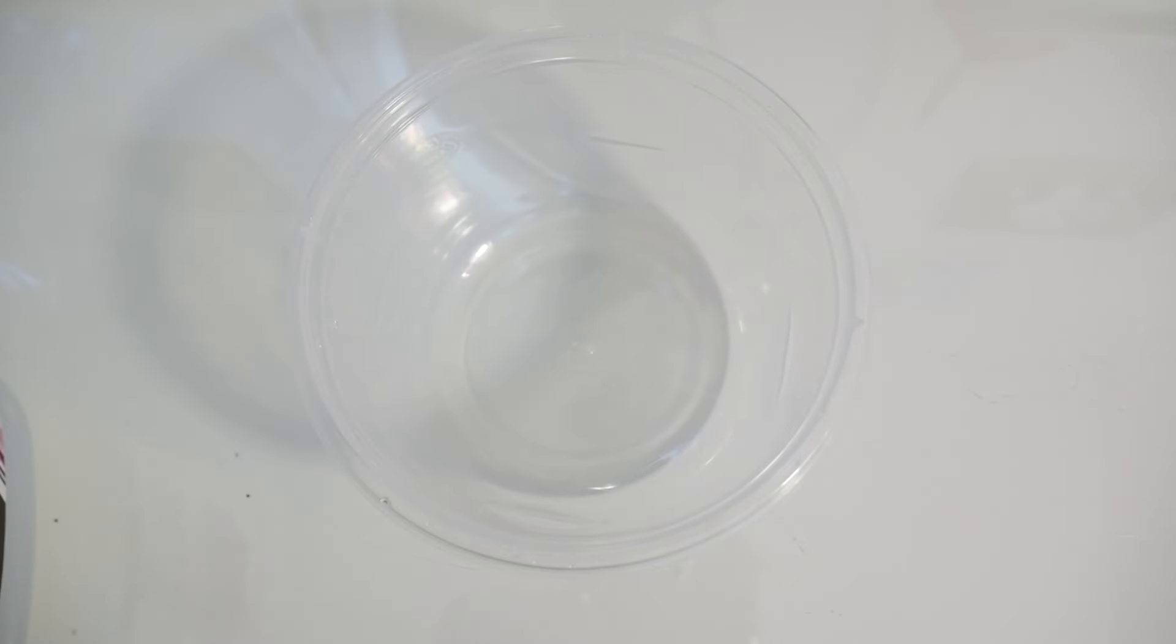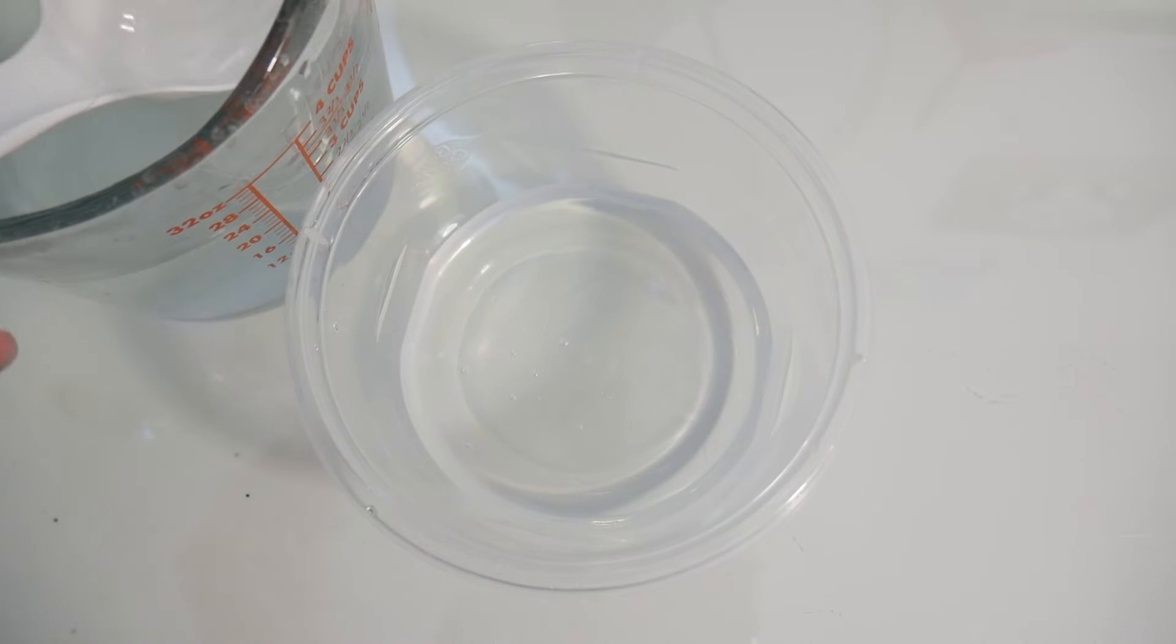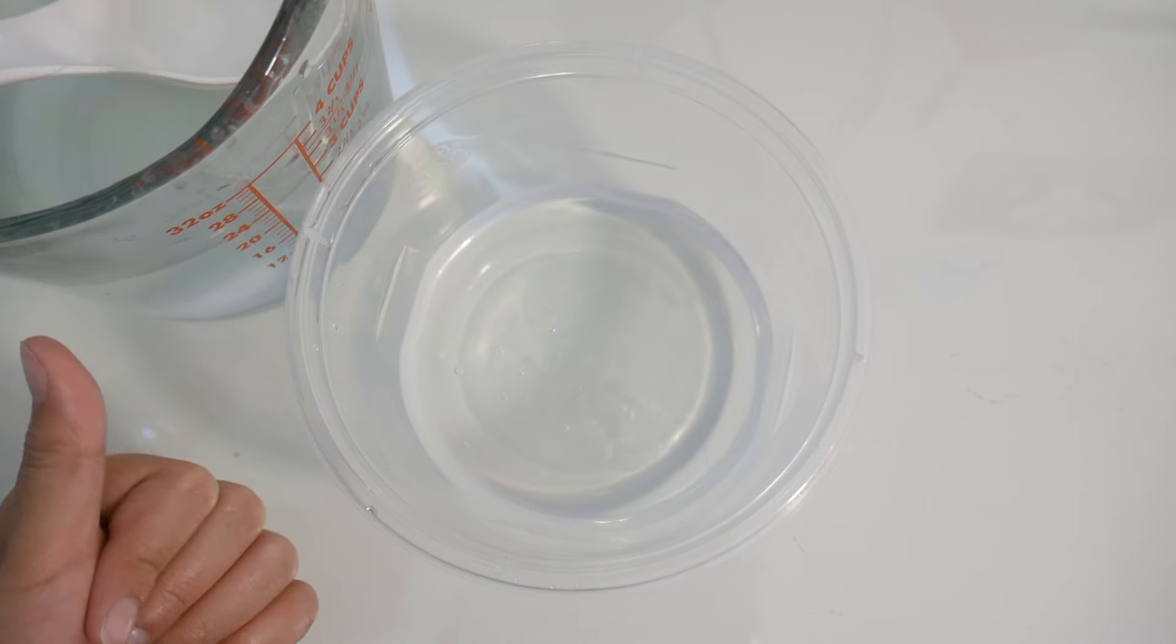Now it's time for our clear mermaid. We're gonna start off by pouring in some clear glue. Now at this moment you can add your food coloring, but since my version is just plain old clear slime, I'm gonna keep it like that. So let's just move straight on to our borax. Now you're gonna pour in a little bit at a time until you get your desired consistency.